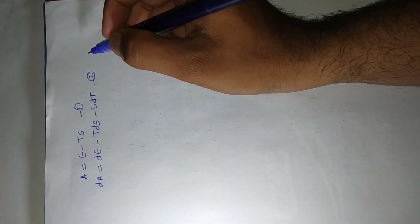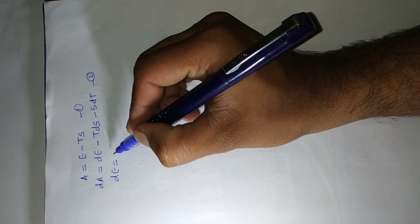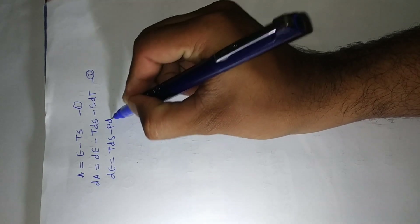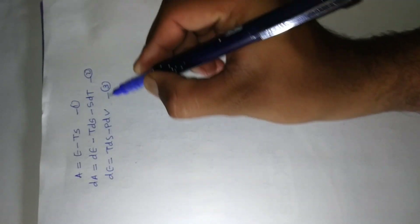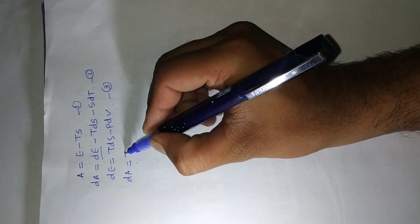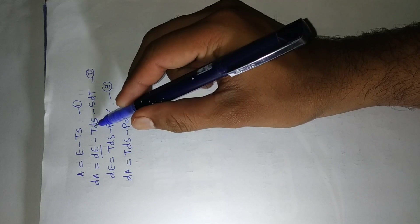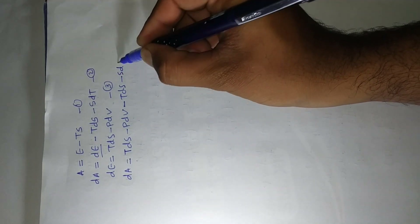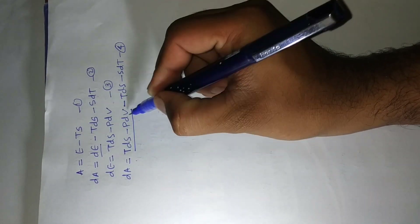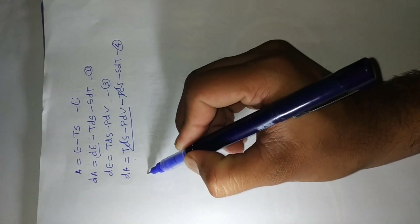We have the value of dE, that means the differentiation of E, is TdS minus PdV. So if you put the value of dE into equation number 2, then we will get: dA = TdS minus PdV minus TdS minus SdT, which is equation number 4. The TdS terms cancel, leaving: dA = minus PdV minus SdT. This is equation number 5.